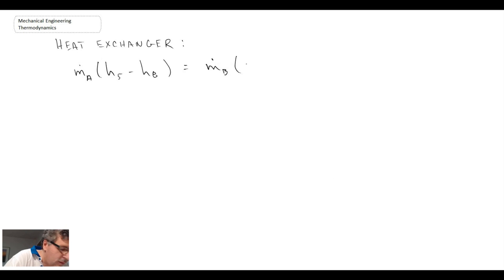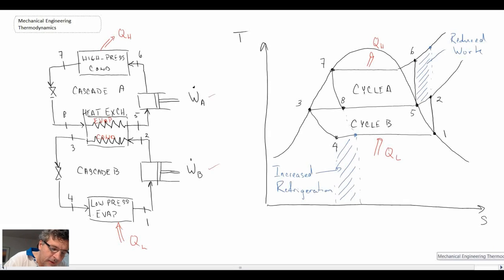The coefficient of performance for this cycle would be whatever desired output. In this case, it's refrigeration - the low temperature heat transfer divided by the net work that we put in. The low temperature, if we look over here, is going to be what is going on in our evaporator here, going from 4 to 1.